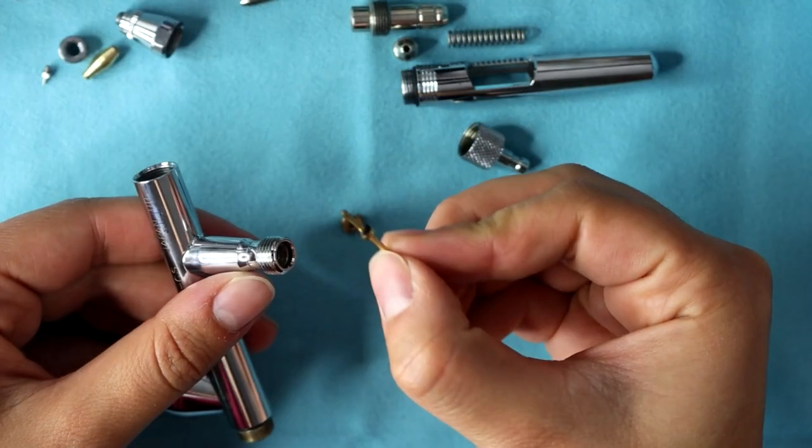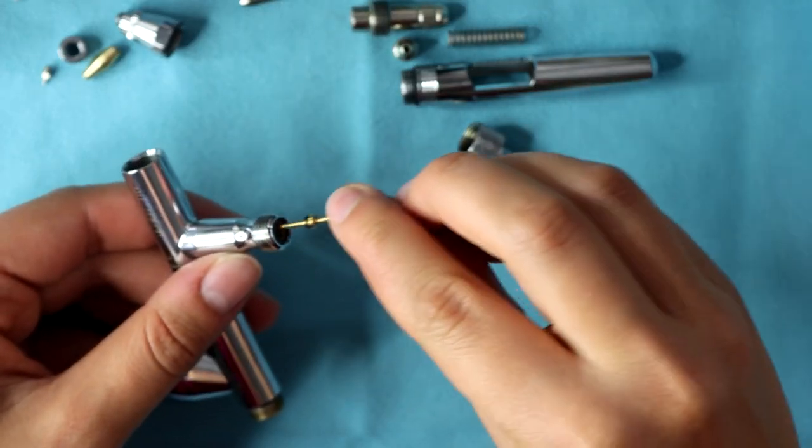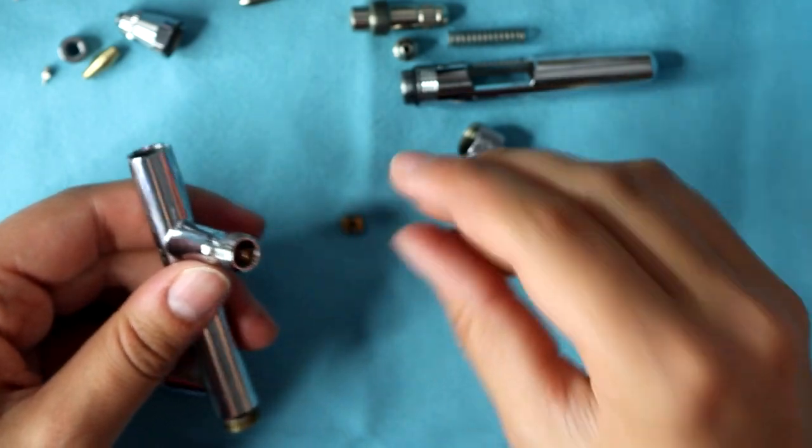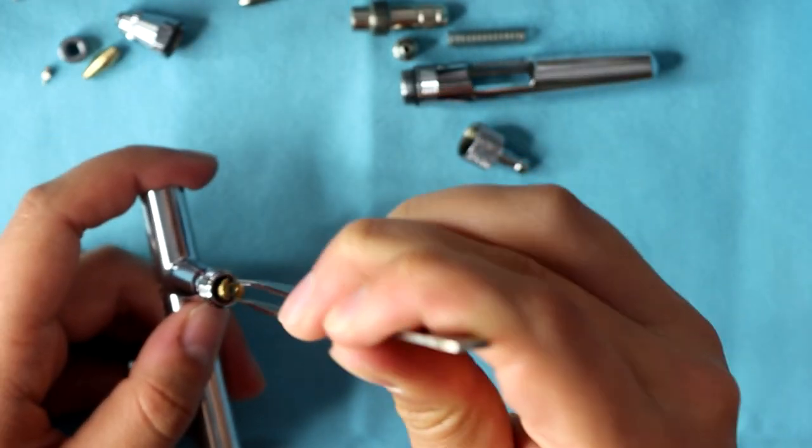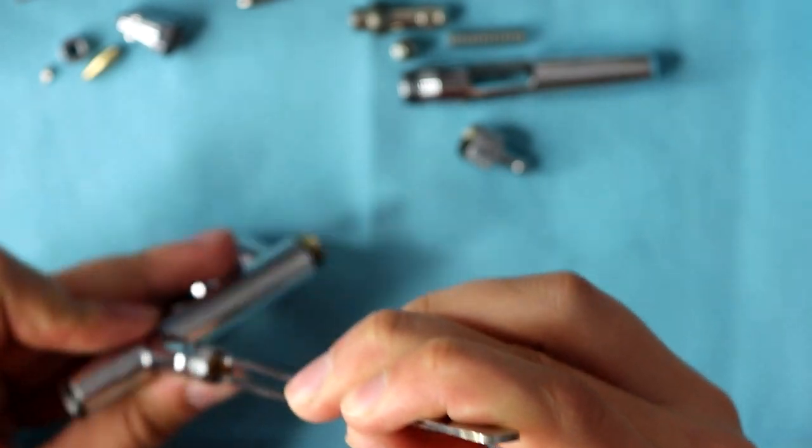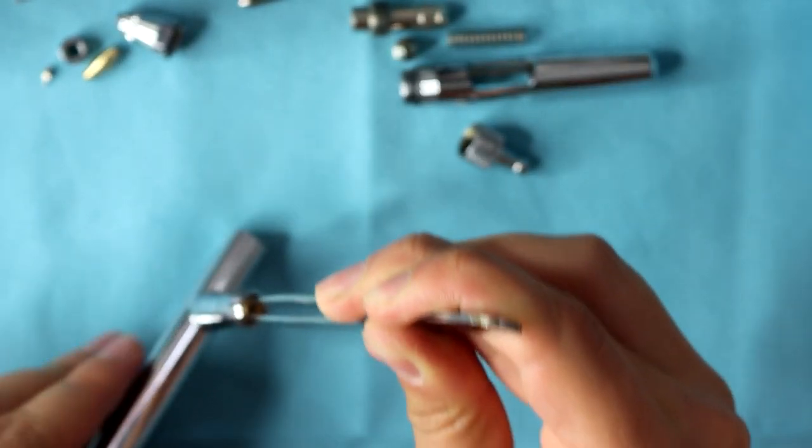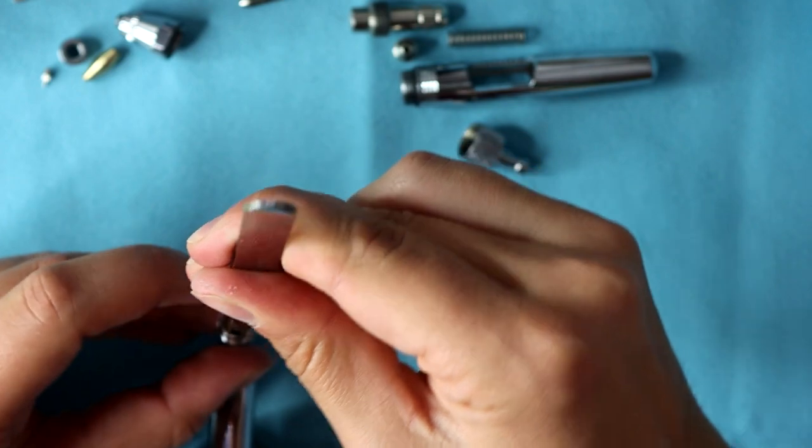To reassemble, we reverse these steps, putting the air valve rod with the o-ring first, and the spring onto that rod. We pick up the keeper with the tweezers, and we twist that into the base of the airbrush until it is hand tight. Don't ever over-tighten things.